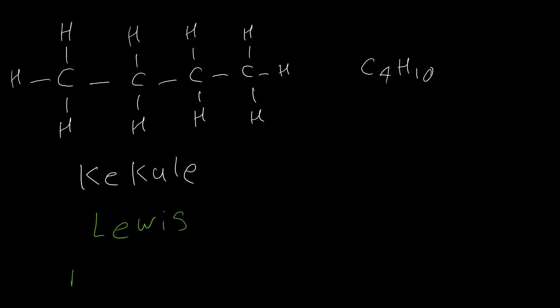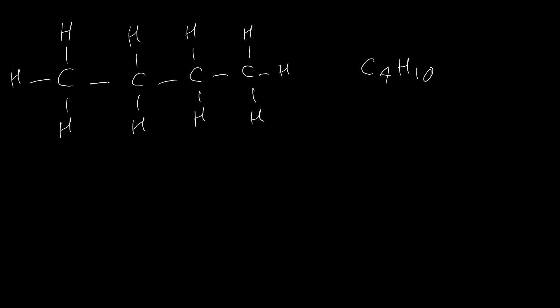As you can see, the structure for butane occupies too much space and it's time-consuming to draw. This structure is very small in organic chemistry, so we are not able to draw big molecules this way. We would like to have some easier way to show molecules. The first method for simplifying the Lewis or Kekule structure is drawing the molecule in condensed form. To draw the condensed structure we look at each carbon in the molecule and write its formula.